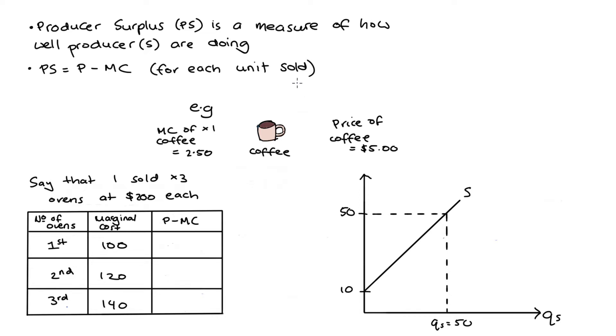Now the approach as a measure of welfare or well-being is pretty intuitive. If I were a producer selling coffee for instance and the marginal cost of one cup of coffee was $2.50 but I was able to sell that coffee for $5, that would be really good for me because the price is higher than the cost of production. So economists say that I get an additional surplus, producer surplus or PS, of $5 minus $2.50 equal to $2.50, that's the producer surplus for that unit.